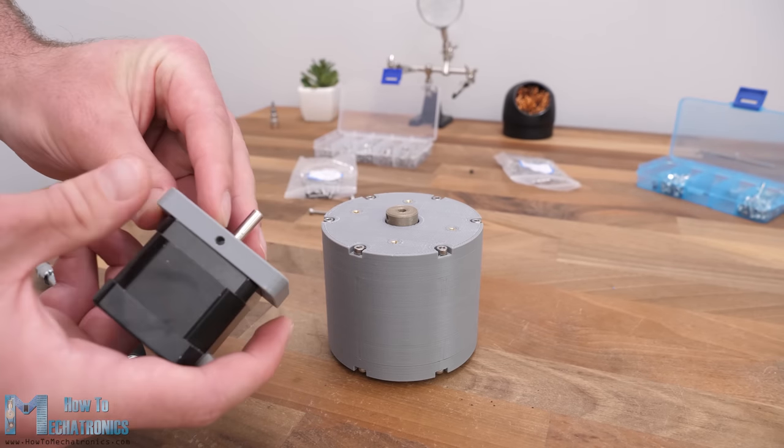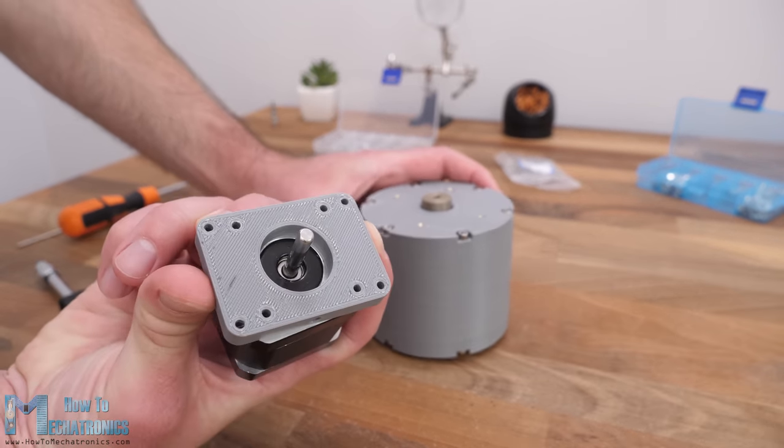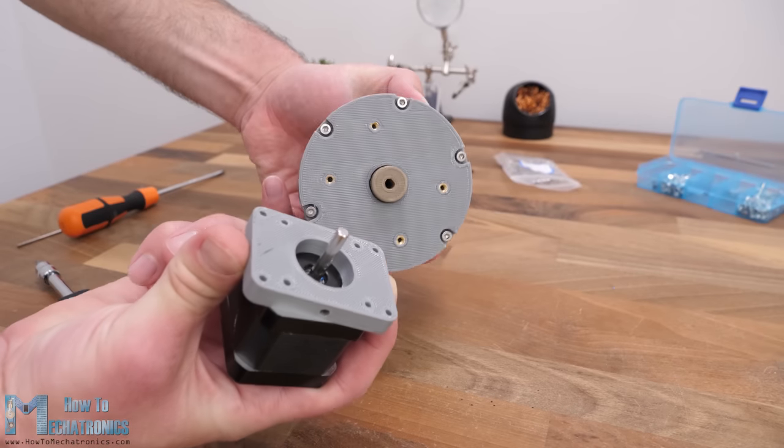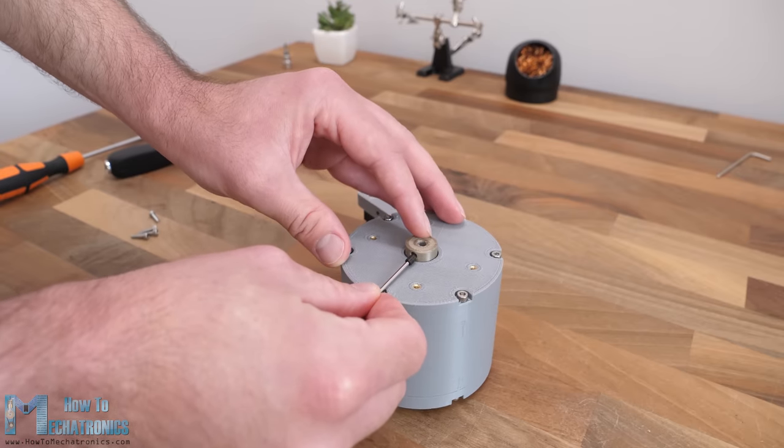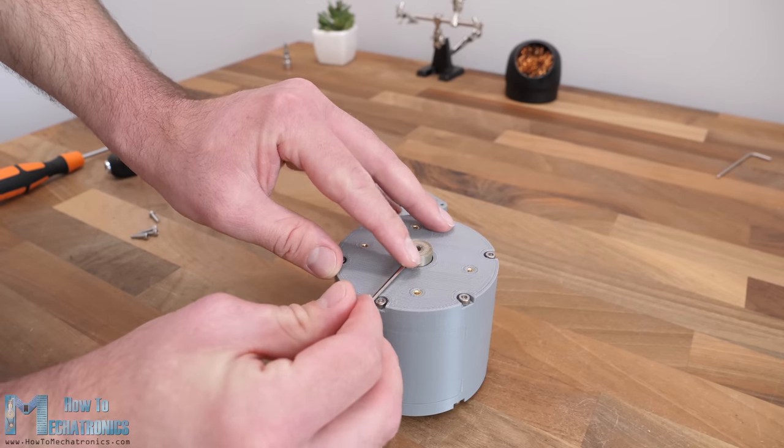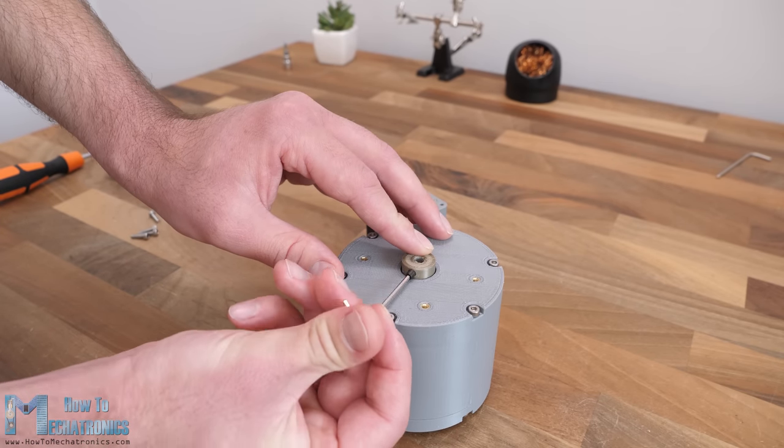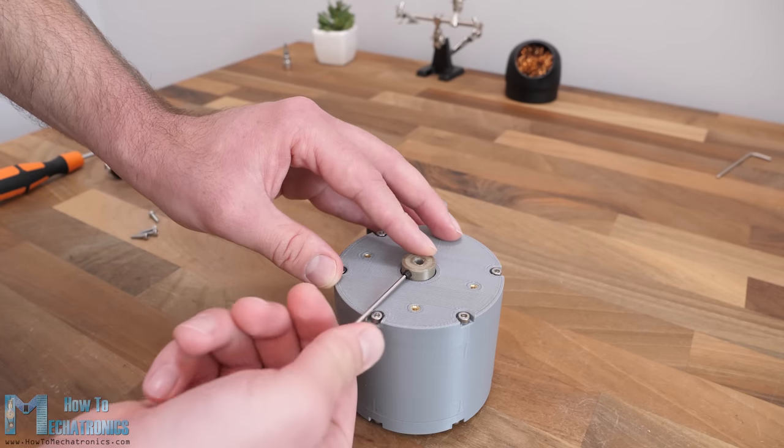In order to secure the motor to the gearbox we need an additional mounting plate which we first need to secure it to the stepper motor. Before inserting the motor in place we can insert a grub screw into the input shaft through which we can tighten the motor shaft to the gearbox input shaft.